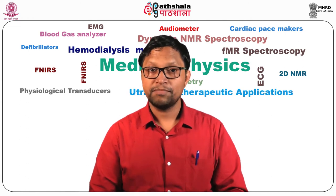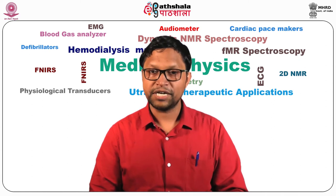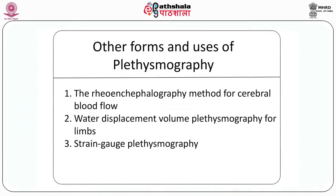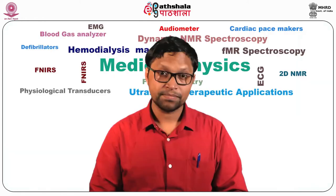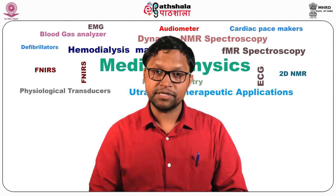Another form of plethysmography uses air-water displacement as a measure of volume changes in limbs. The functionality of the penis is also measured by penile plethysmograph, which either uses a volumetric air chamber or a strain gauge to measure circumferential diameter. This uses a mercury-in-rubber or indium or gallium-in-rubber ring for mechanoelectrical transduction.